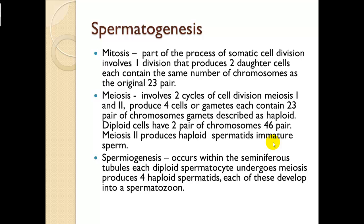Spermatogenesis and mitosis. Part of the process of somatic cell division involves one division that produces two daughter cells, each containing the same number of chromosomes as the original — that is 23. Meiosis involves two cycles of cell division, meiosis 1 and meiosis 2, and produces four cells, or gametes, each containing 23 pairs of chromosomes. Gametes are described as haploid — haploid meaning half. Diploid cells have two pairs of chromosomes, or 46.